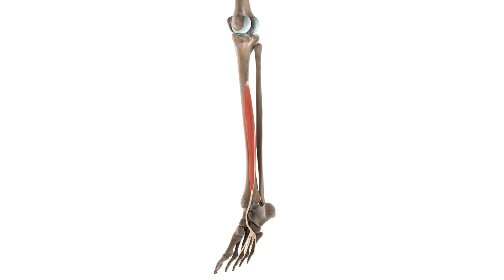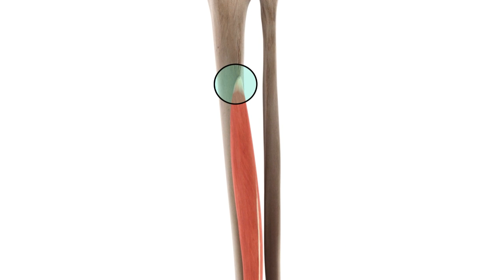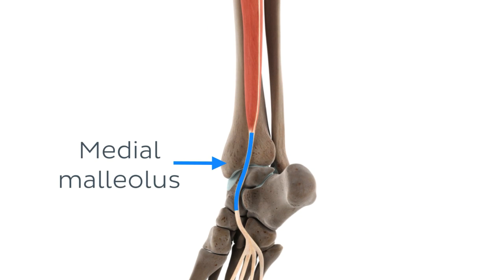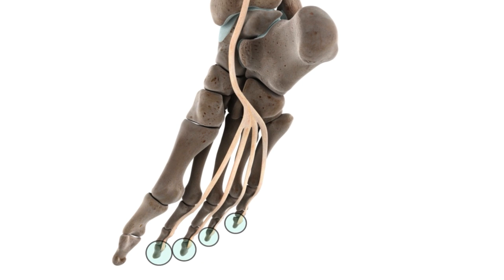Now let's look at the attachments of the flexor digitorum longus muscle. It originates from the medial part of the posterior surface of the tibia. After passing inferiorly towards the medial malleolus, it curves around it, wraps underneath the foot, then inserts onto the bases of the distal phalanges of the lateral four digits — in other words, the second, third, fourth, and fifth toes of your foot.